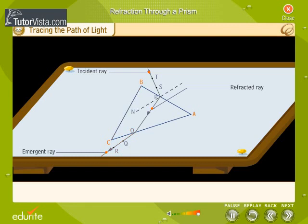Let PN and ON be the normal at the points P and O respectively. And let I be the angle of incidence and R the angle of refraction.